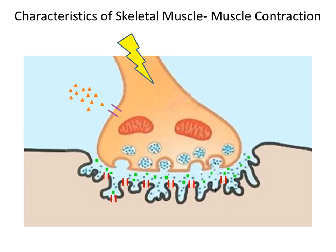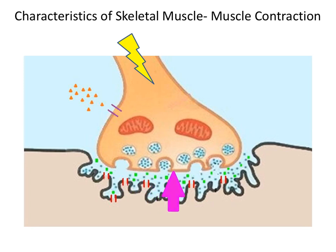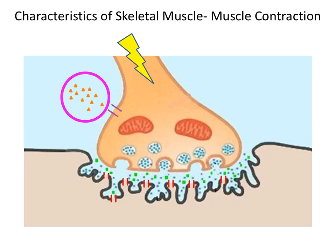Let's begin by recapping the parts of the neuromuscular junction. Beginning with the motor neuron, you have the axon terminal. Within the axon terminal, you have synaptic vesicles filled with neurotransmitter. Also on the axon terminal, you have voltage-gated calcium ion channels. The membrane of the axon terminal is sometimes referred to as the presynaptic membrane. Surrounding the axon terminal, you'll have free-floating calcium ions.